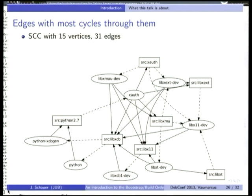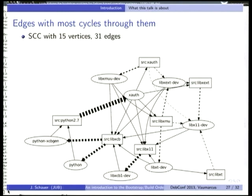Edges with most cycles through them: it's probably hard to see for this tiny 15-vertex graph, in contrast to the big graph with 1,000 vertices. For this tiny graph, there is one edge out of all 31 which, if removed, makes the whole thing acyclic. It's hard for a human to see that, so the heuristic of edges with most cycles identifies that this edge has many cycles through it, and removing it indeed makes the whole thing acyclic.